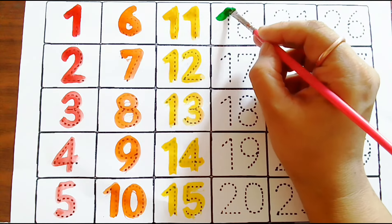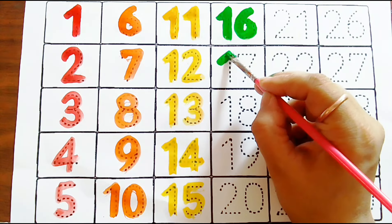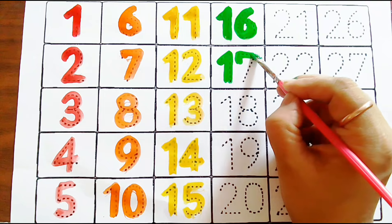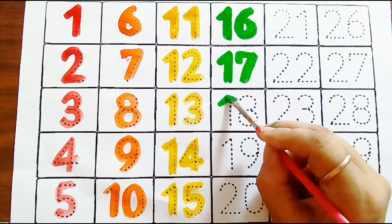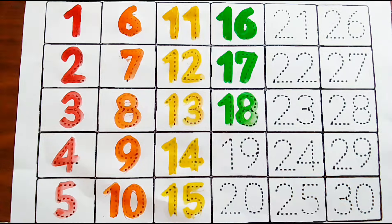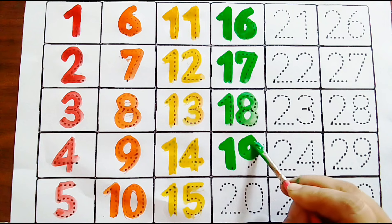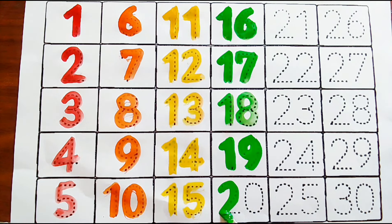Green color: one six, sixteen. One seven, seventeen. One eight, eighteen. Green color: one nine, nineteen. Two zero, twenty.